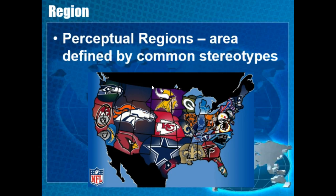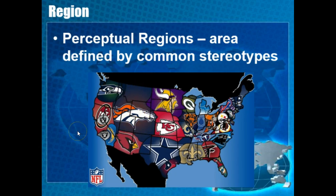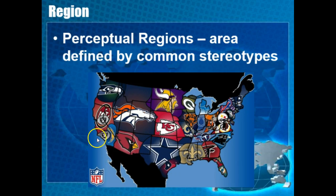The third type is perceptual region — an area defined by common stereotypes. For example, if you look at NFL fan bases across the United States, you might say people in one area are mostly Cowboys fans, another area mostly Texans fans, another mostly Cardinals or Broncos fans. They're not clearly defined boundaries — someone in El Paso might be a Seahawks or Raiders fan — but stereotypically, for general purposes, people in a given area tend to support certain teams. It's just defined by stereotypes.